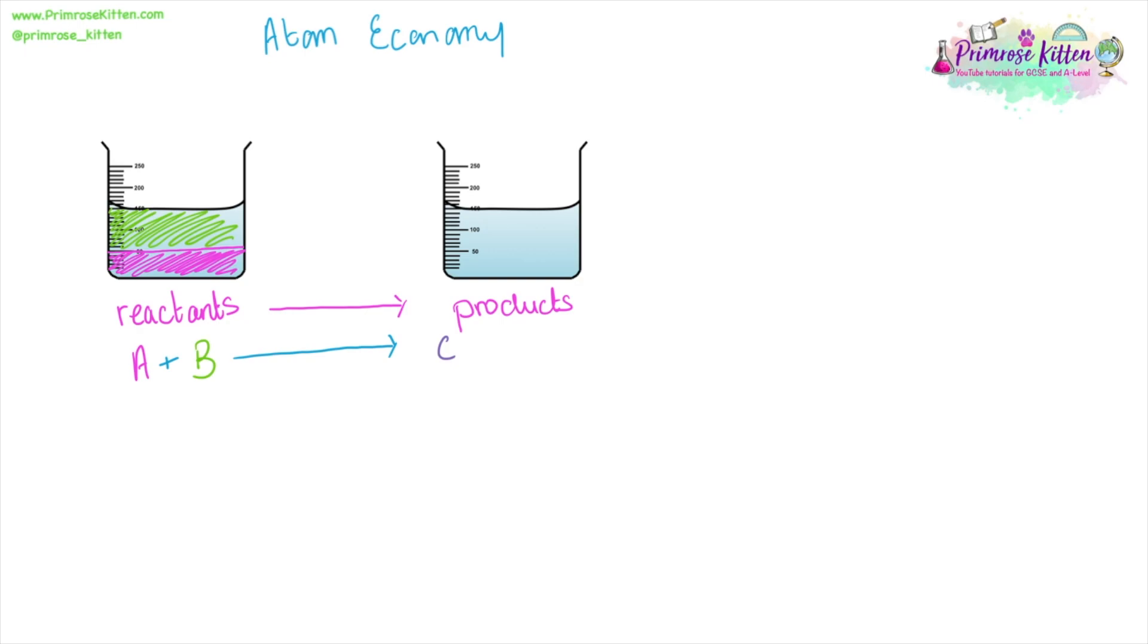They turn into our products C and D. The reactants A and B contain all of the atoms that we've put into this reaction. But what we actually want out of it is C, this is the desired product or the required product, depending on the exact wording that your textbook or your teacher uses. They both mean the same thing. It's the bit that you actually want.